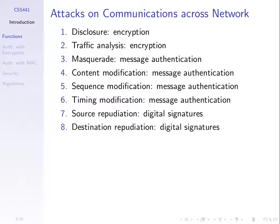Content modification — someone sends a message, someone in the middle modifies it along the way. How do we detect that? Authentication. Sequence modification — someone sends five messages: one, two, three, four, five — and the attacker rearranges the order. How do we stop that? We use message authentication based upon the sequence number. Related to that is timing — some very detailed attacks can be successful if the attacker can modify the timing at which messages are received, such as attacks on financial systems. Again, authentication is used.